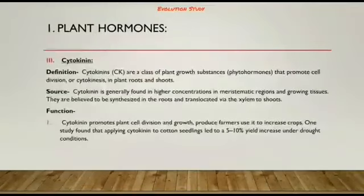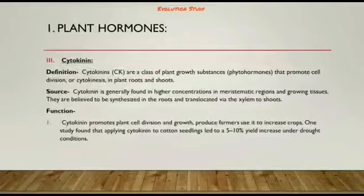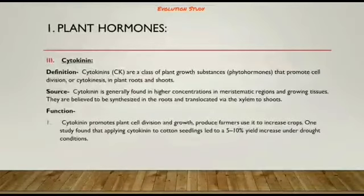Cytokinins (CK) are a class of plant growth substances — phytohormones — that promote cell division or cytokinesis in plant roots and shoots. Cytokinins are generally found in higher concentrations in meristematic regions and growing tissues. They are believed to be synthesized in the roots and translocated via the xylem to shoots.